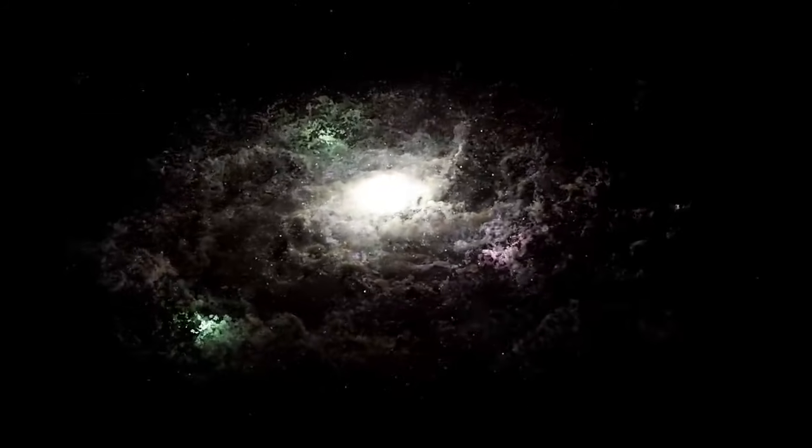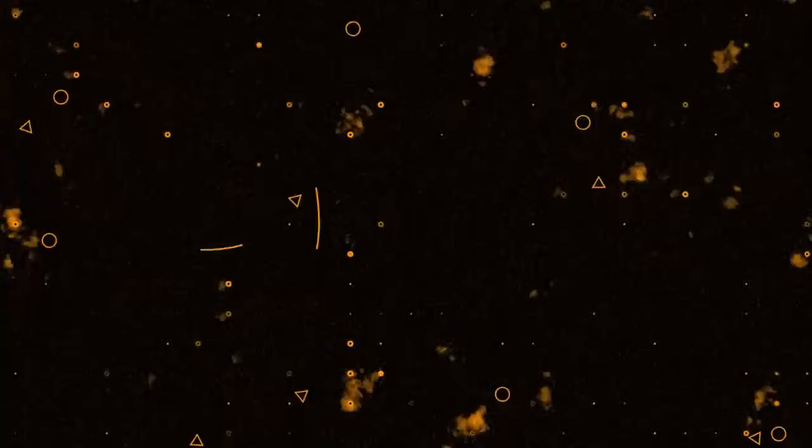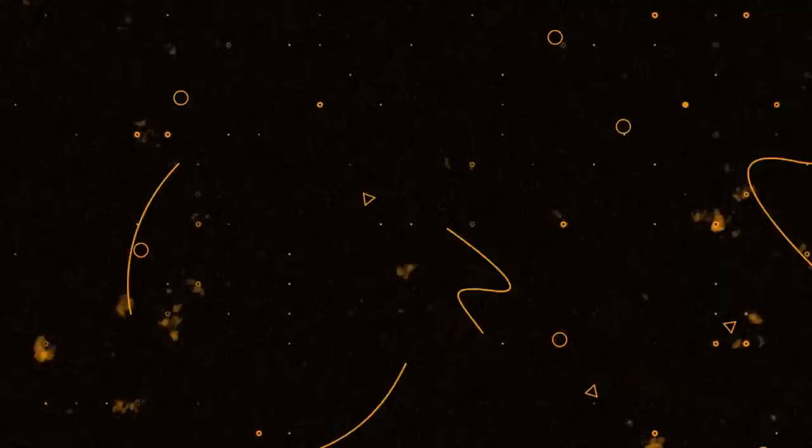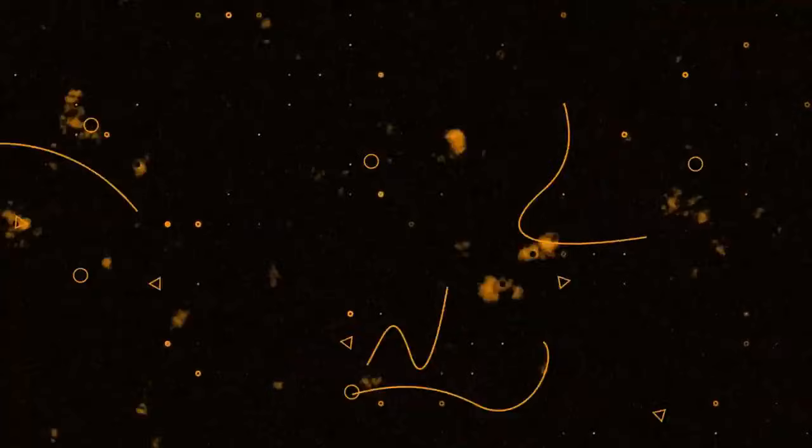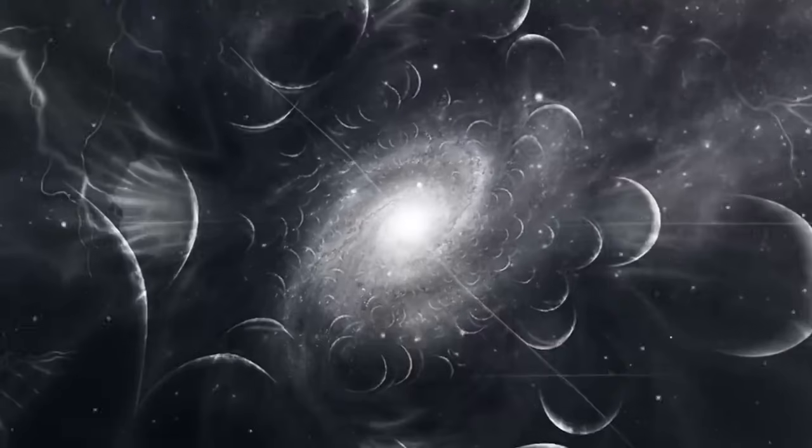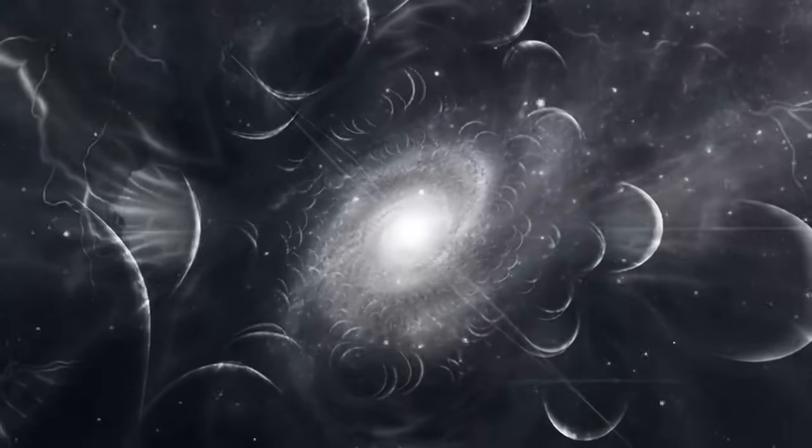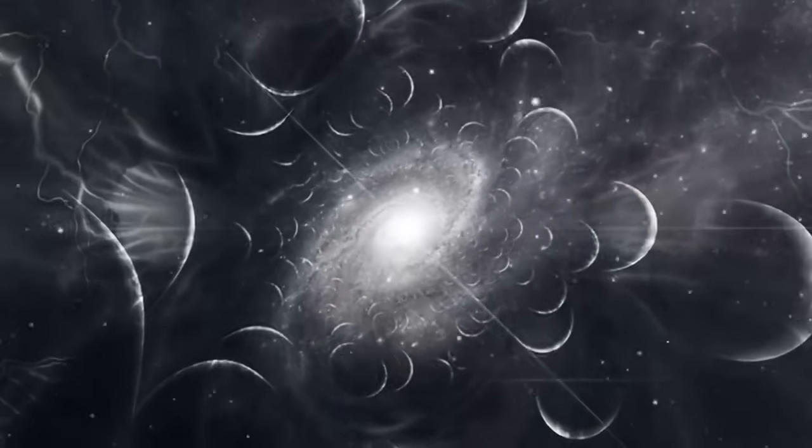The James Webb Telescope has also illuminated one of the universe's most elusive enigmas, dark matter. By observing gravitational lensing, where massive cosmic clusters bend light from objects behind them, Webb has helped create high-resolution maps of dark matter's distribution.